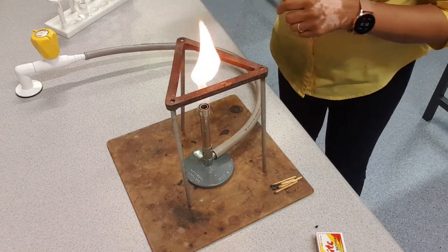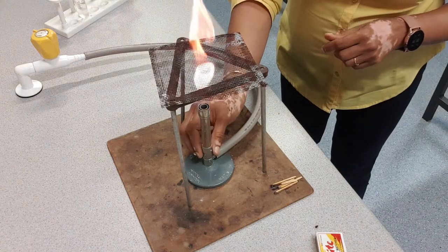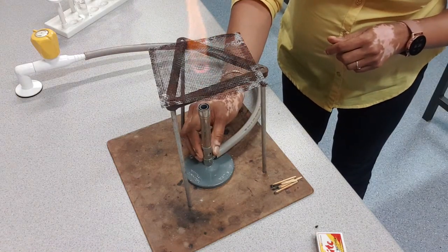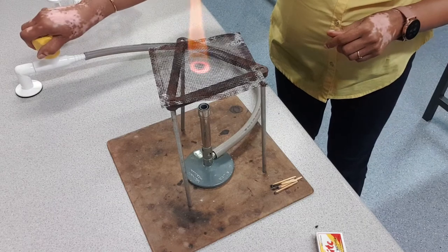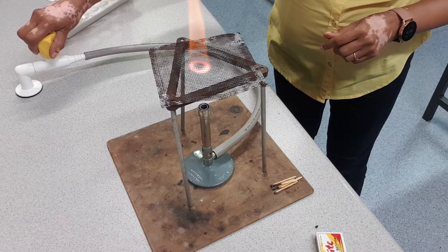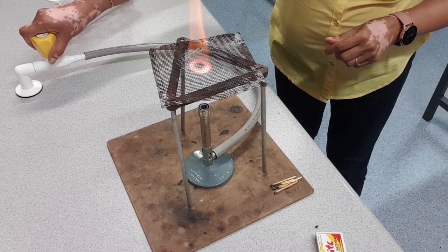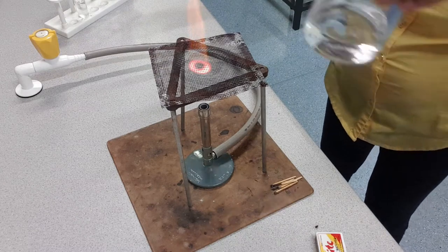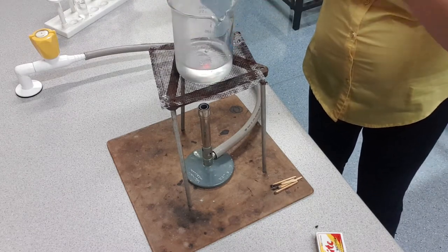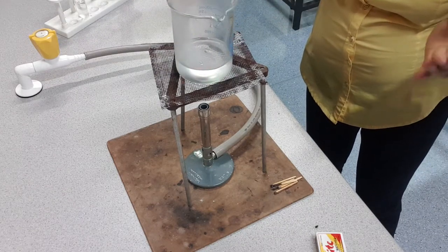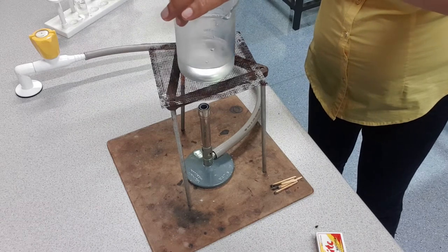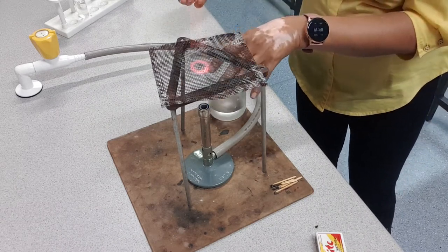Then I put a gauze mat. I want to heat it, so I'm turning this to a blue flame. It's really big, so I'm making it smaller by adjusting the tap. If I wanted to heat something, I just put it on top there.